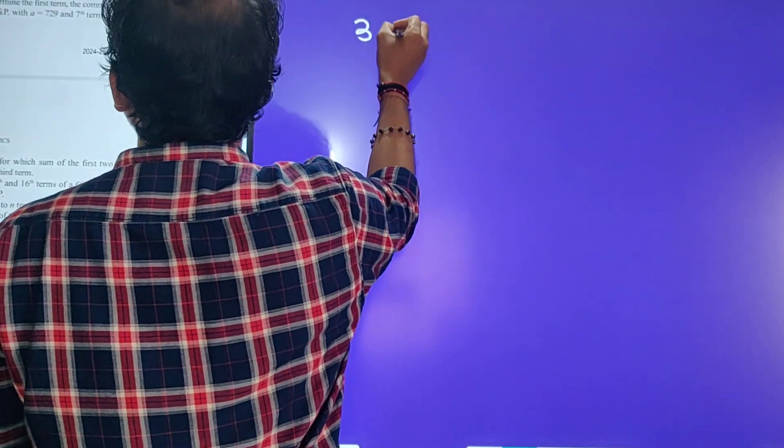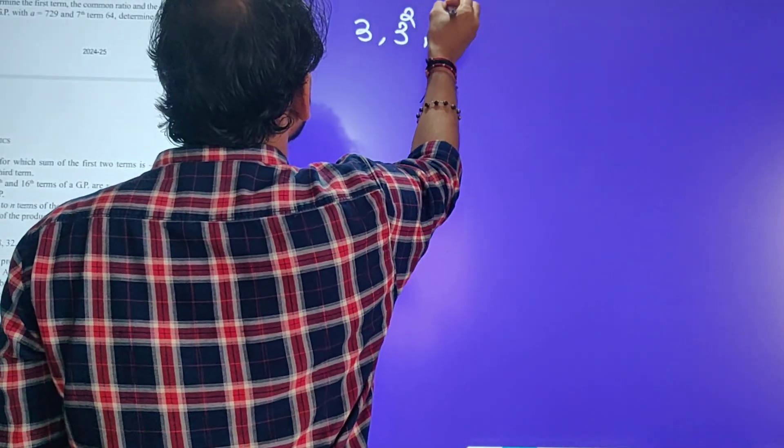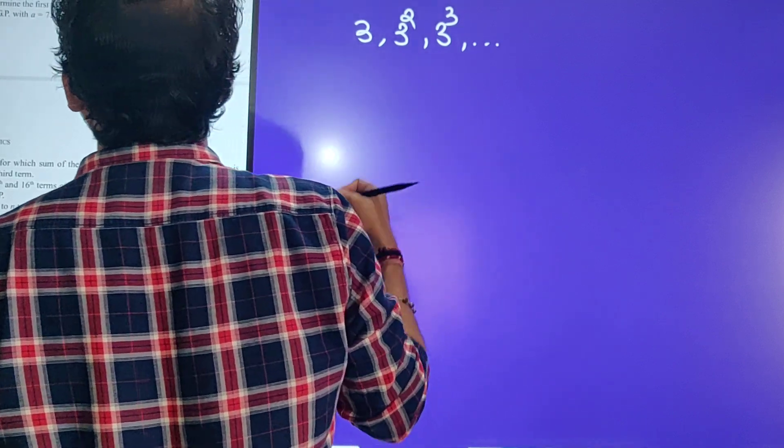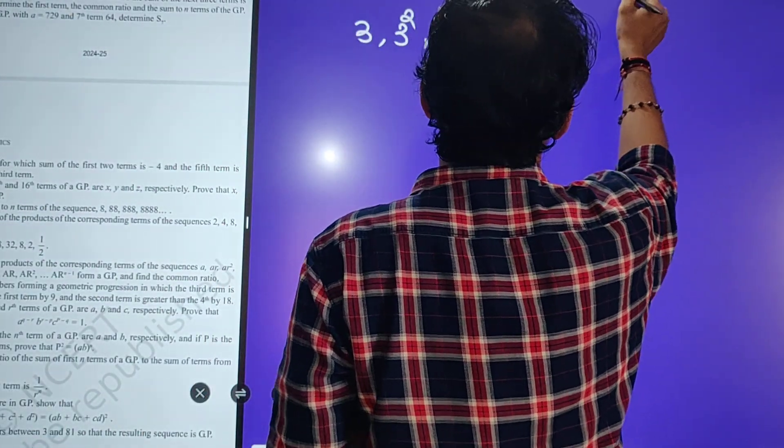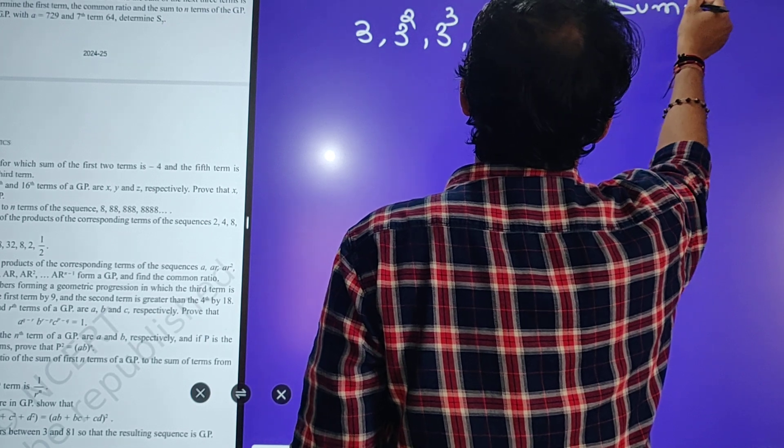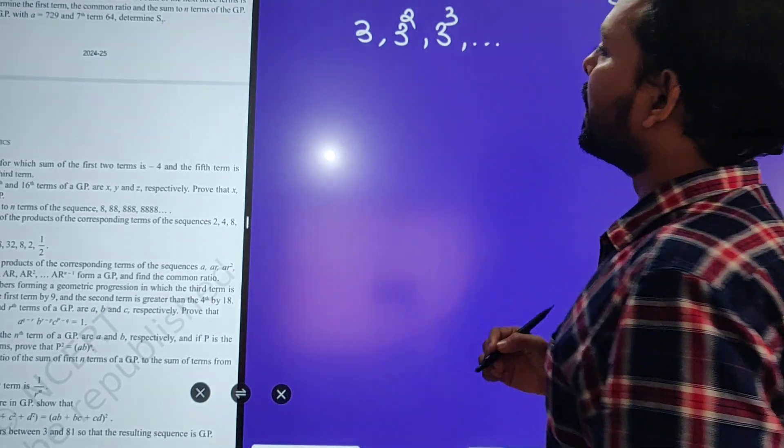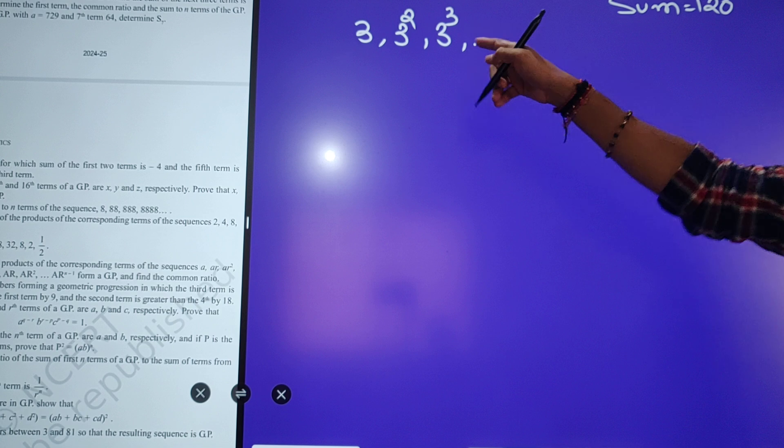3, 3 square, 3 cube, dot dot dot. How many terms are needed to give this sum? 120. Sum kitna hai? 120. What does that mean? How many terms will we get in this GP?